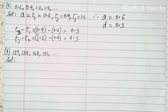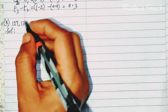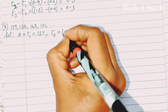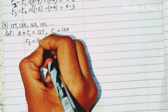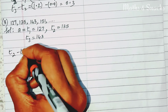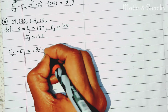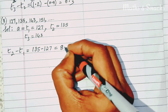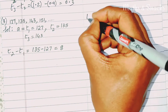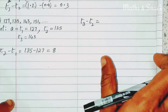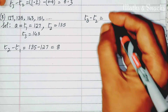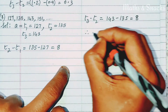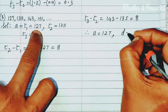For the sequence 127, 135, 143: a = T1 = 127. T2 minus T1 = 135 minus 127 = 8. T3 minus T2 = 143 minus 135 = 8. Therefore, a = 127 and d = 8.